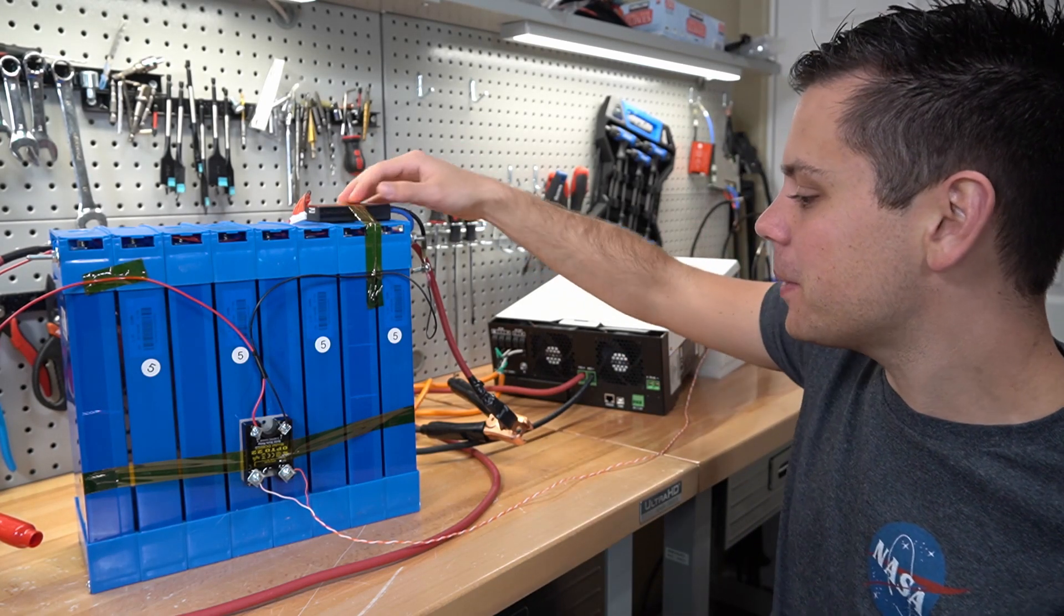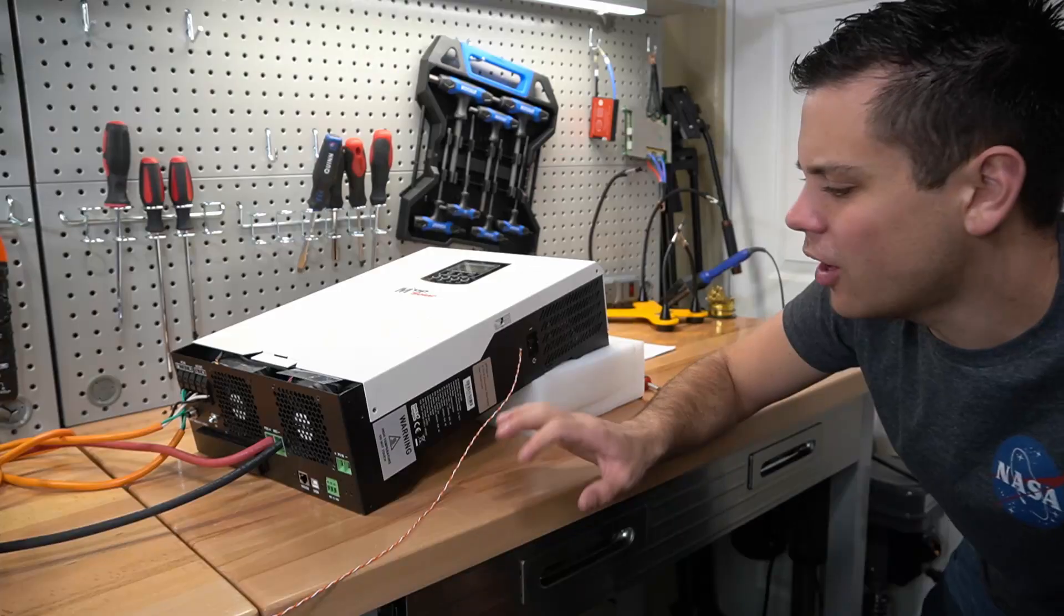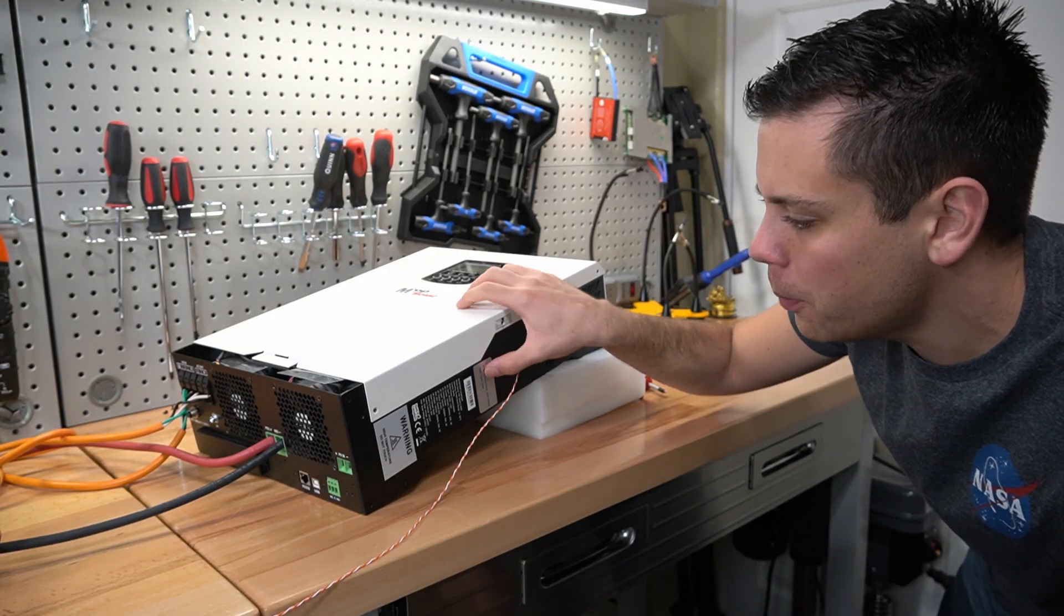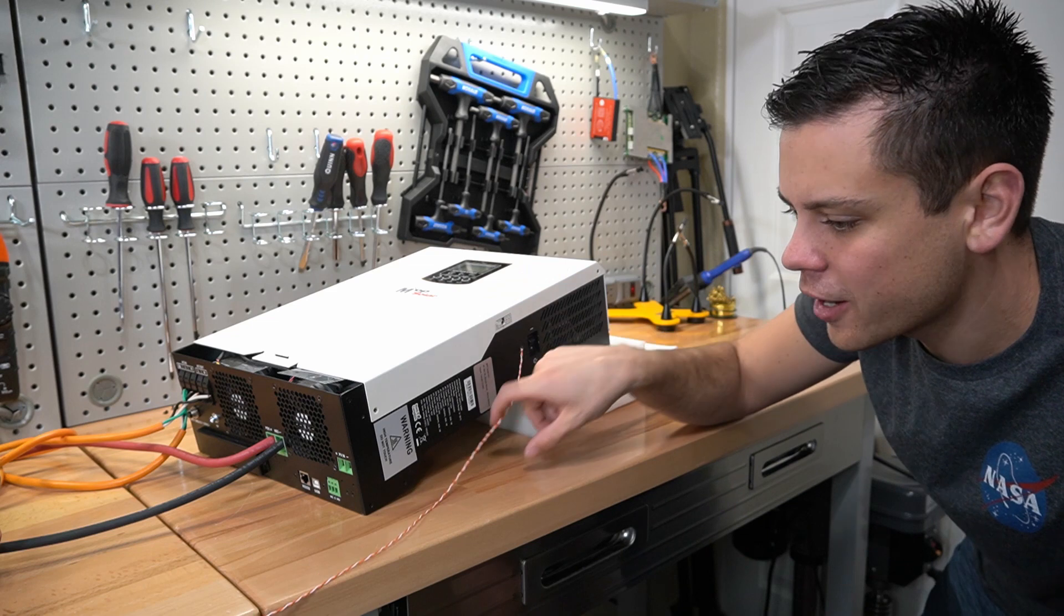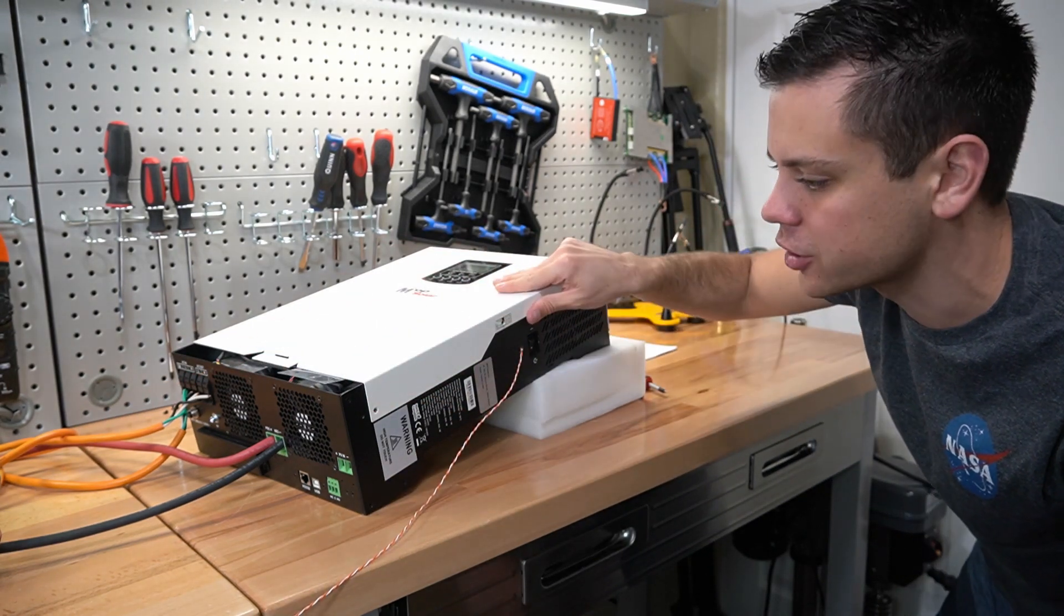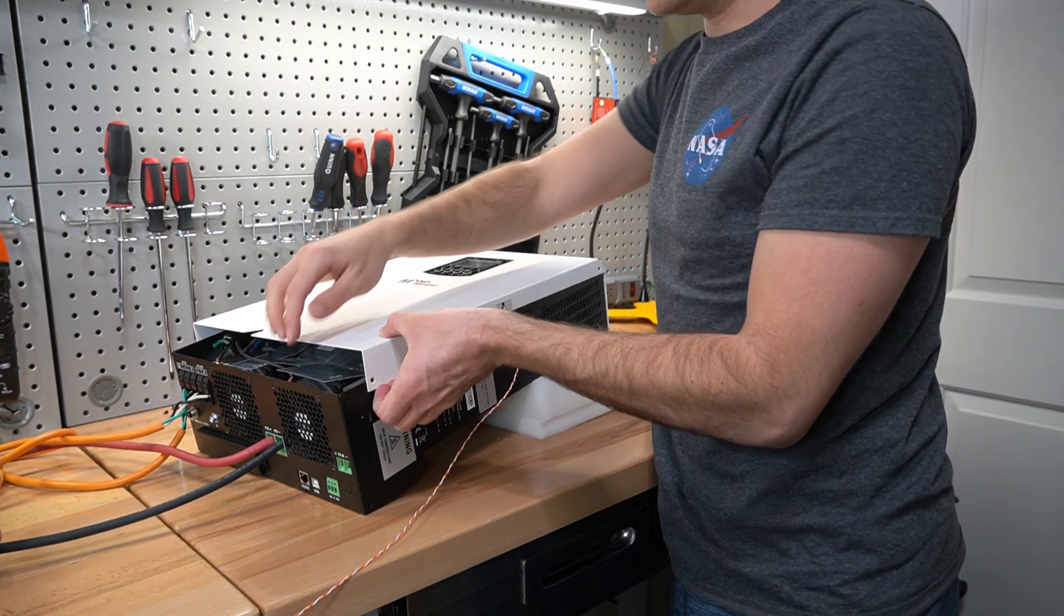So that's how you use a small BMS to control an inverter. The hardest part of this system is opening up your inverter and wiring these two wires in series with the on and off switch. So let's open it up and I'll show you what's inside.